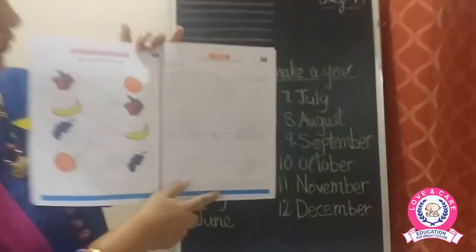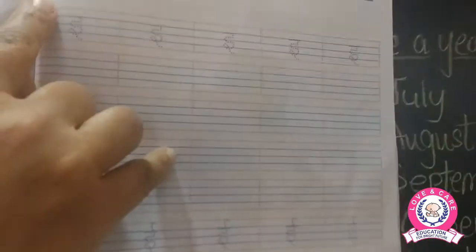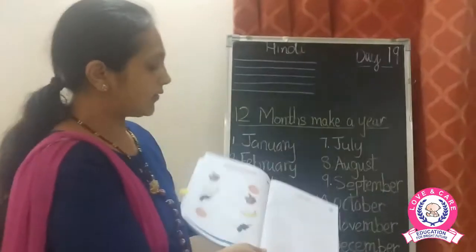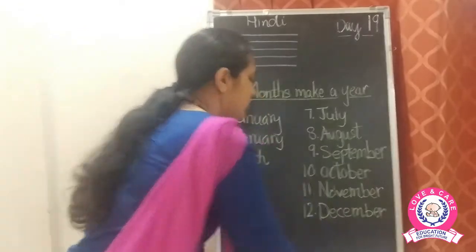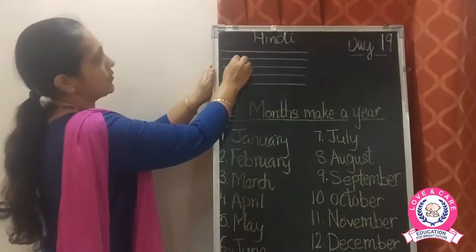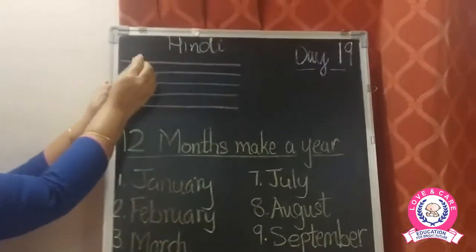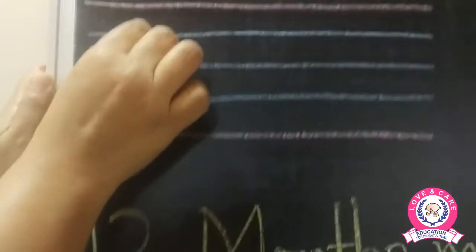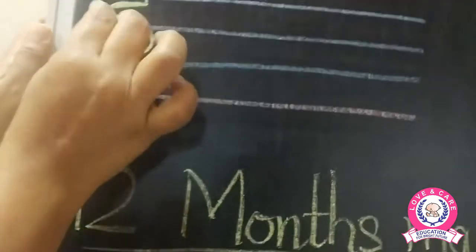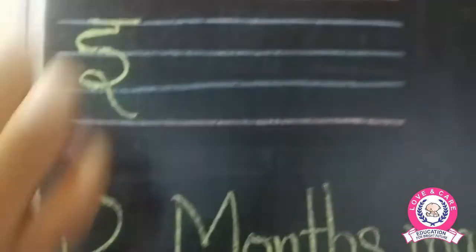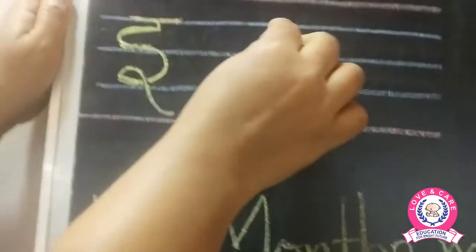Today you have a Hindi worksheet for writing the letter ए and ई — you have to write and press the Hindi letters. Let me show you the formation one more time. ए kaise likhte hain: standing line, then this way — it's almost like an S but not an exact S.